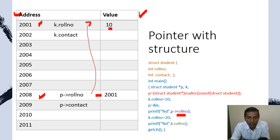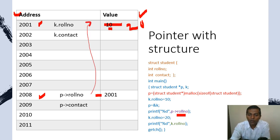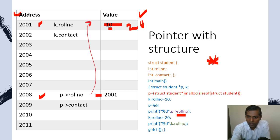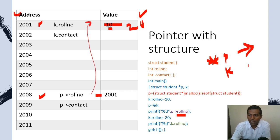When using pointer objects, we use the arrow operator (->). When using a normal structure object, we use the dot operator (.). So the arrow operator and dot operator differ depending on whether we are using a pointer-type object or a normal object.